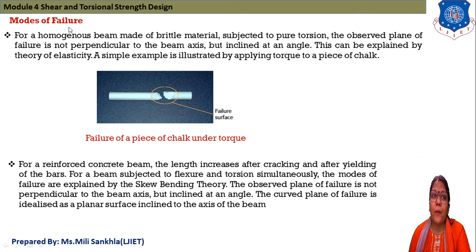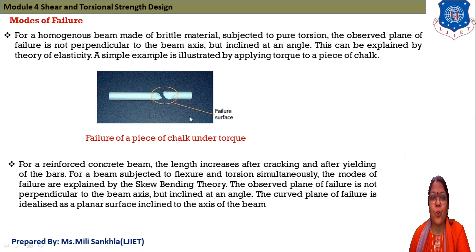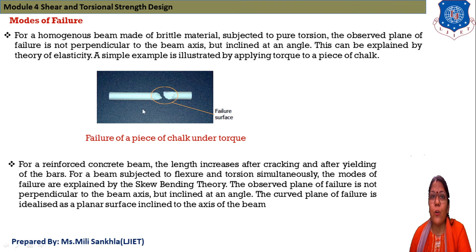For modes of failure — for a homogeneous beam made of brittle material subjected to pure torsion, the observed plane of failure is not perpendicular to the beam but inclined at an angle. This can be explained by the theory of elasticity. A simple example is applying torque to a piece of chalk — when chalk is subjected to torsion, the failure figure is inclined. This brittle material failure is inclined, as shown in the figure.